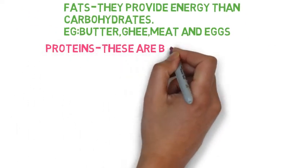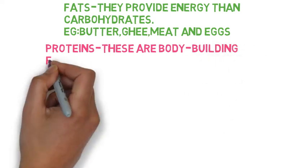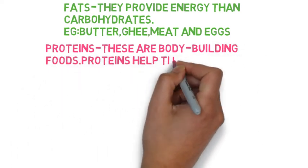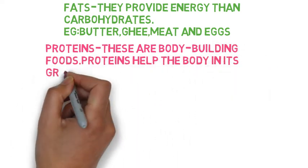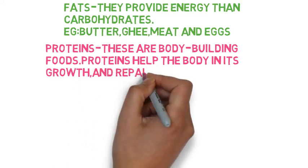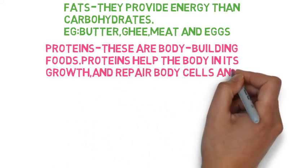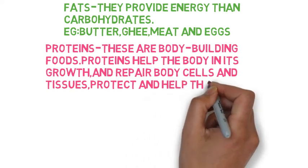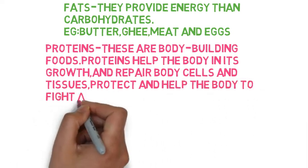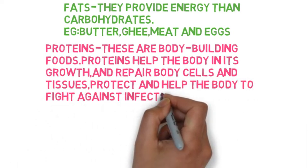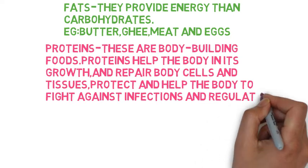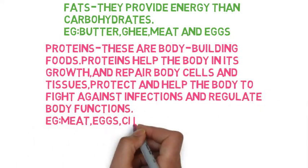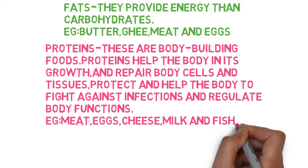Proteins are body-building foods. They help the body in its growth and repair of body cells and tissues. Proteins also protect and help the body fight against infections and regulate body functions. For example, meat, egg, cheese, milk, and fish.